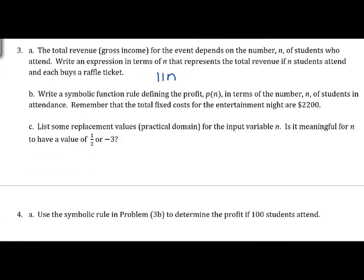Write a symbolic function rule defining profit P(N) in terms of the number of students N. Our revenue is 11N and our costs are $2,200, so we subtract our fixed costs. The profit function is P(N) = 11N − 2200.